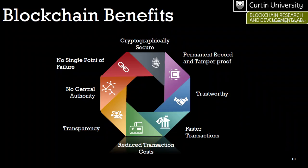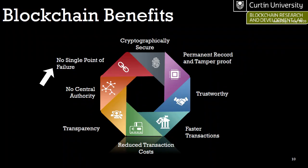Blockchain also provides transparency and visibility of transactions and data. There is no central authority controlling it — it has a very distributed architecture, with multiple copies of the blockchain stored across the internet. There is no single point of failure: if one computer holding the blockchain crashes or gets hacked, there could be hundreds of other copies distributed throughout the network, making the data very secure.